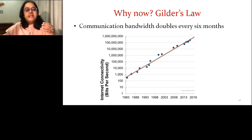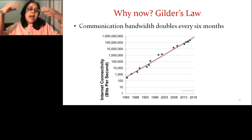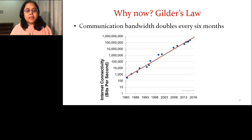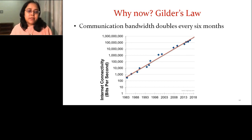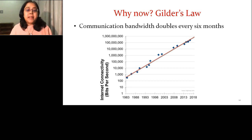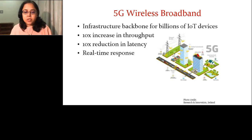On the networking side, these devices need to connect to the network. That's enabled by Gilder's Law, which says communication bandwidth is doubling every six months. You are able to send a lot more data — images, videos, and all kinds of other data streams.